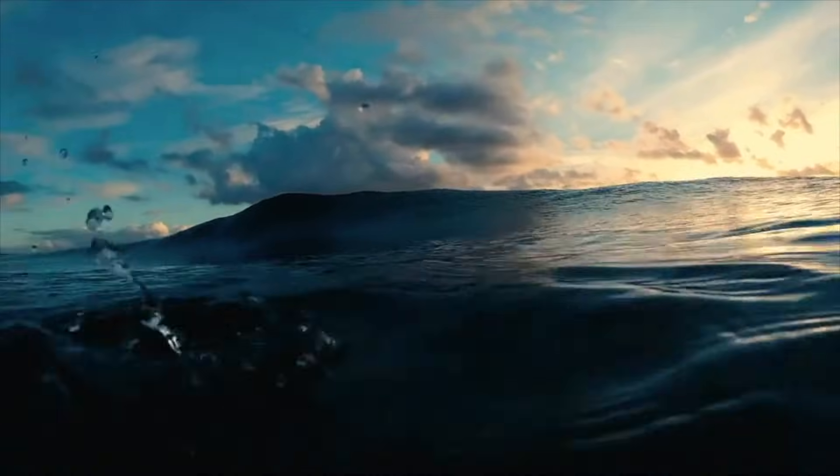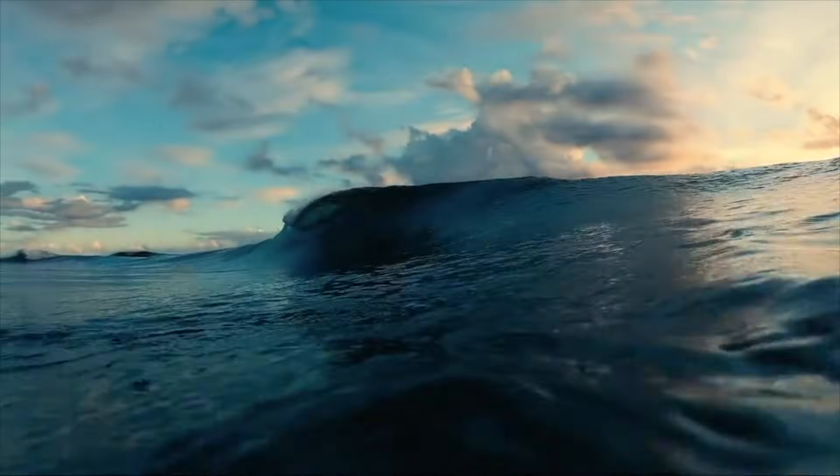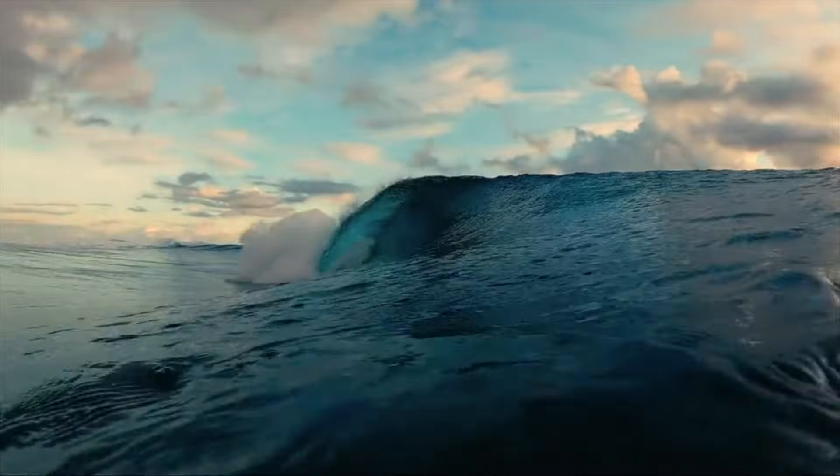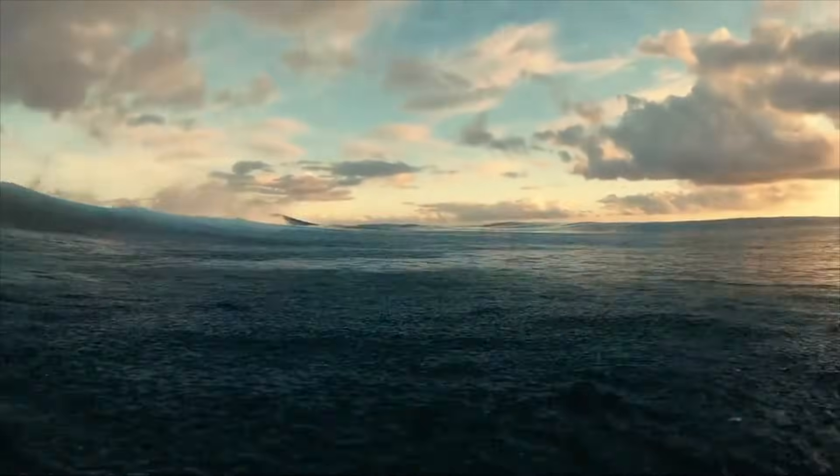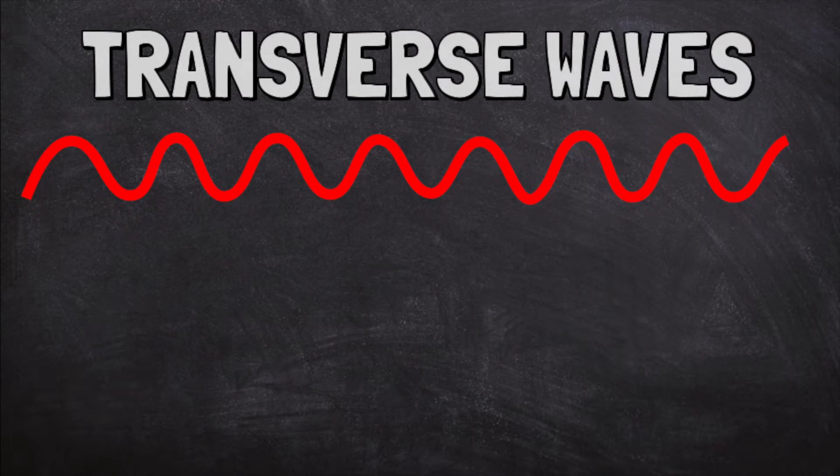Waves can be described by how they move. Some waves move up and down as they move forward. Picture waves in the ocean. They are moving towards the shore. As they do, the height of the wave also rises and falls. This is an example of a transverse wave.